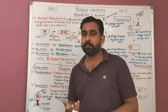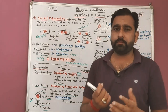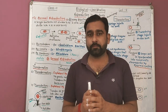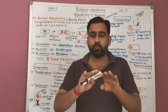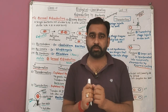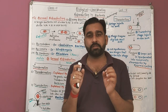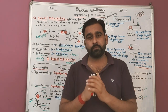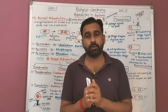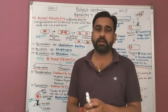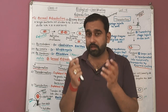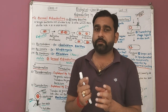In amoeba and other organisms, in binary fission, first of all karyokinesis occurs — the nucleus divides and two nuclei are formed, then cytokinesis occurs — cytoplasm divides and two daughter cells are formed. But in prokaryotic cells, a true nucleus is absent; instead a nucleoid is present, meaning the genetic material is directly present in the cytoplasm.